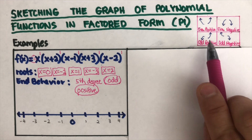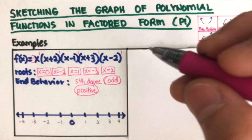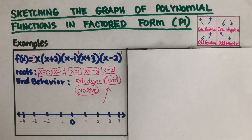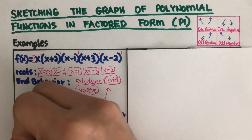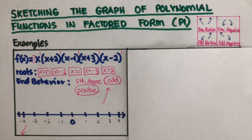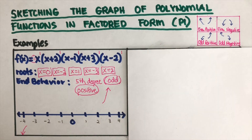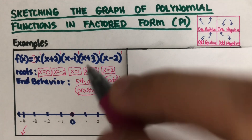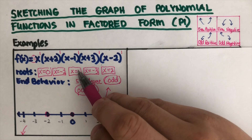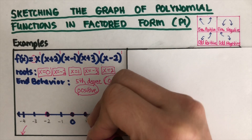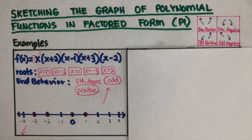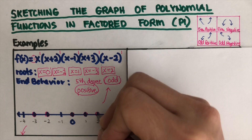Looking at the shapes, odd positive is going to look like this — one end goes up on this side and the other end goes down. Now we plot the roots: the first root is at zero, the second root is negative two, the third root is positive one, the fourth root is negative three, and the fifth root is positive two.